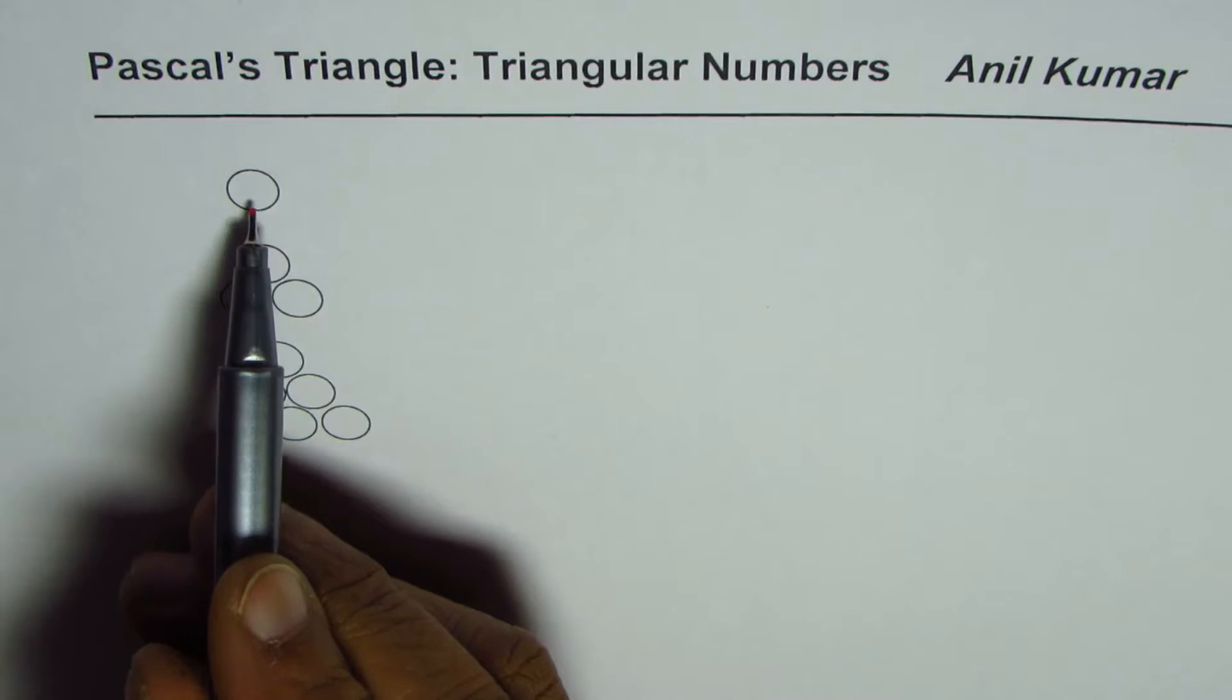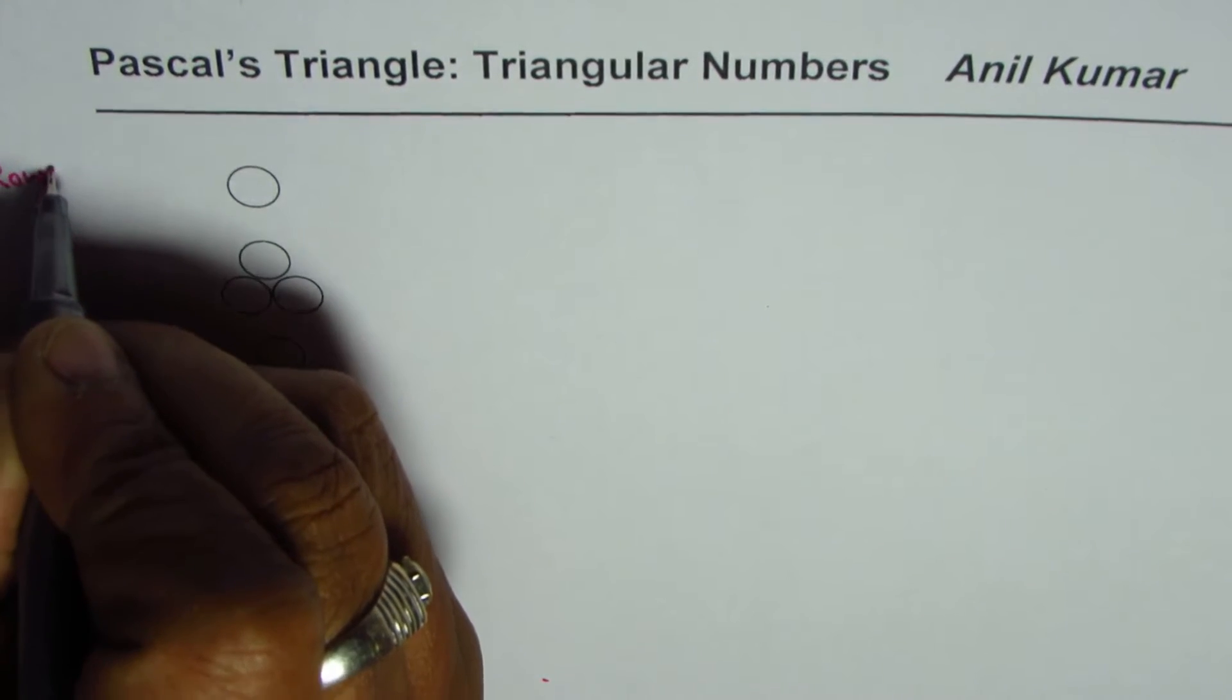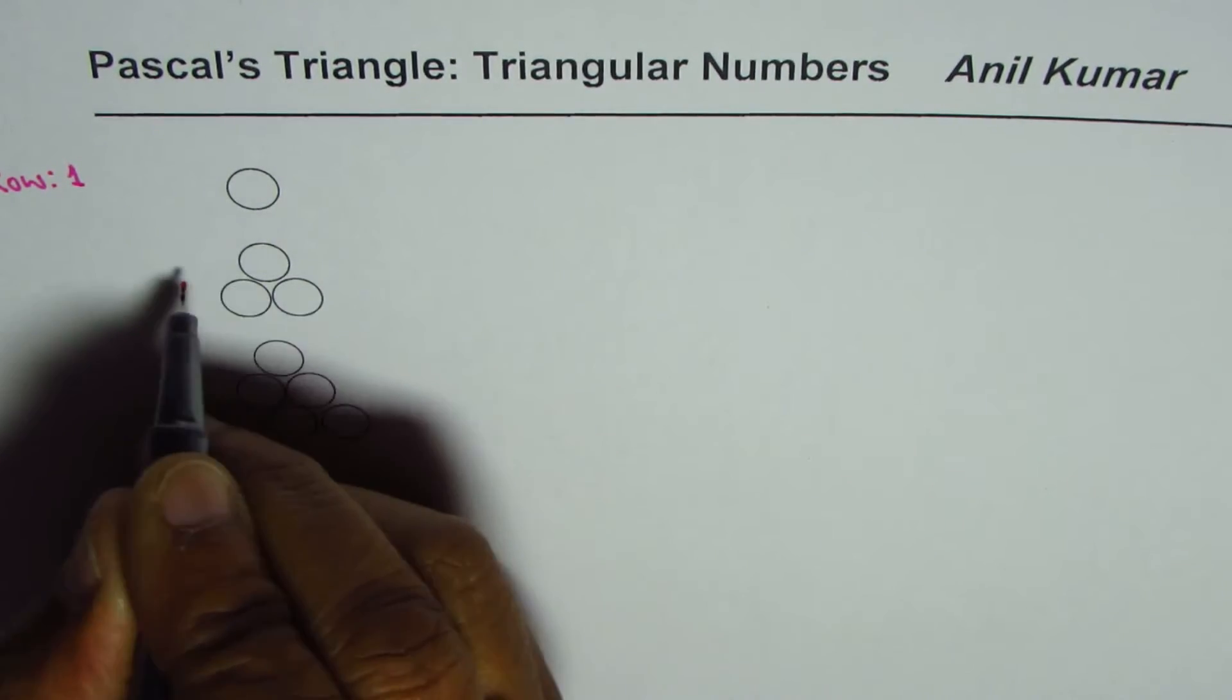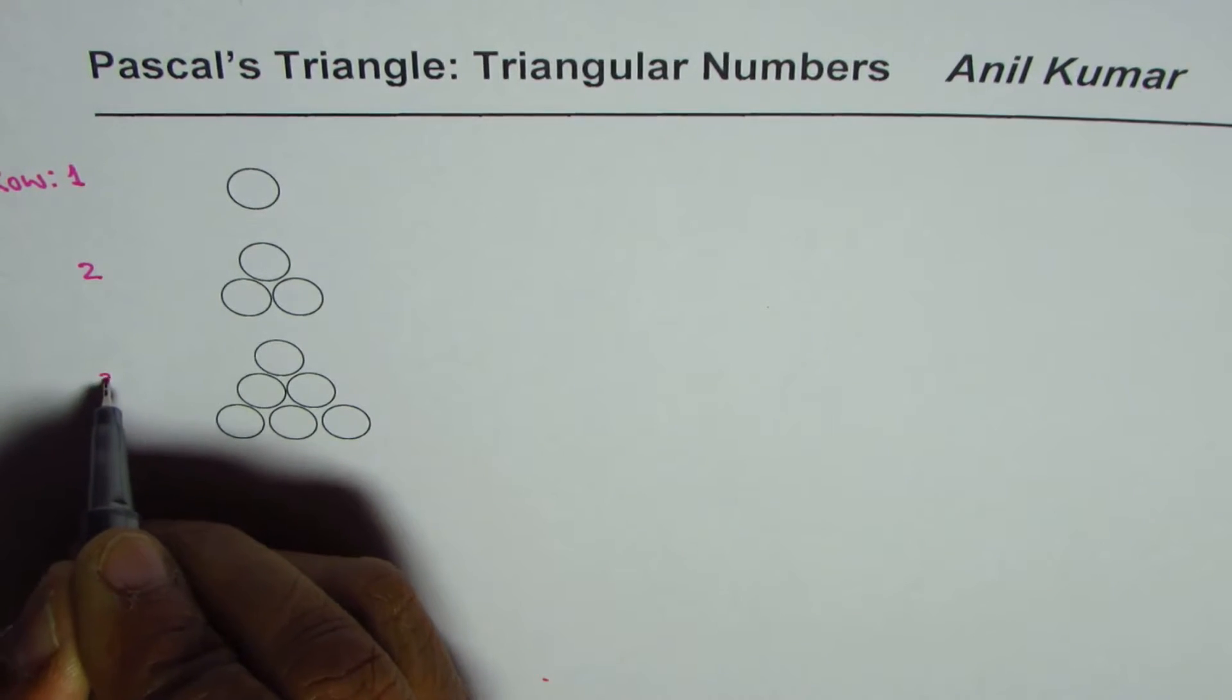In this case we have one row. Let me write down here number of rows as one. In this case we have two rows and now we have three rows.